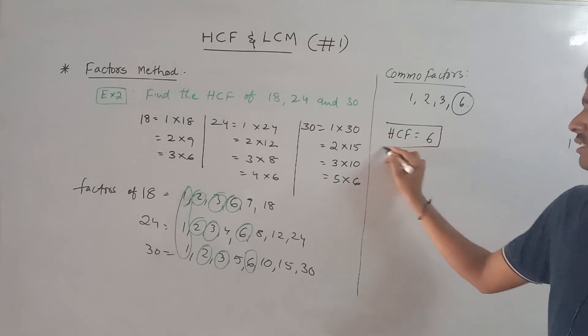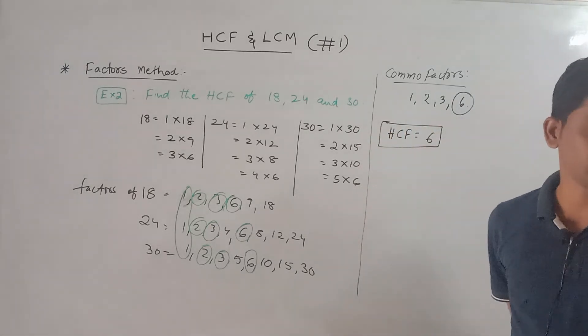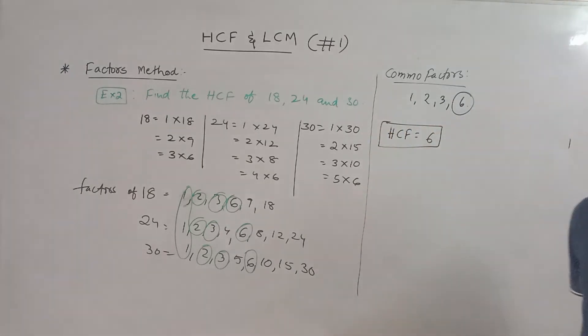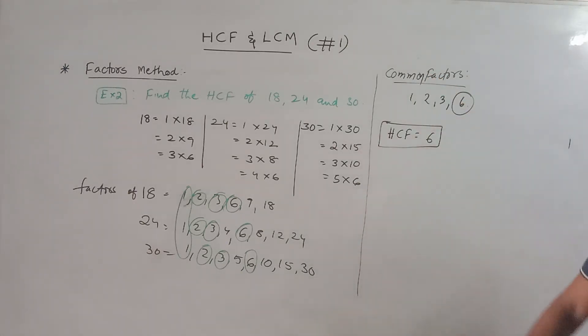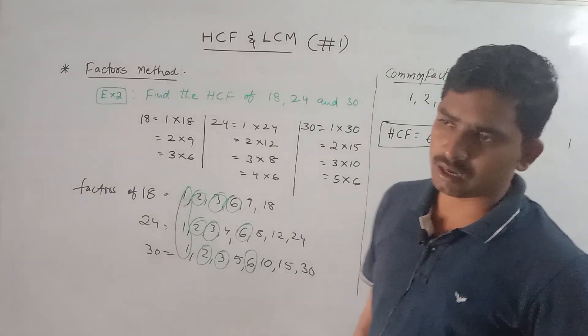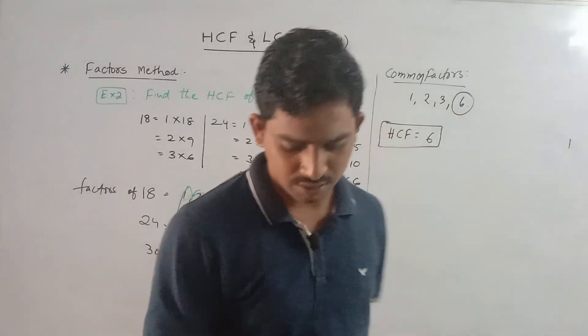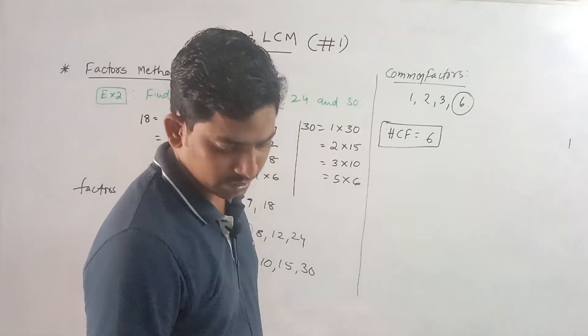The highest common factor is 6. So the HCF of 18, 24, and 30 is 6. This completes the common factors method.